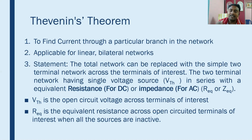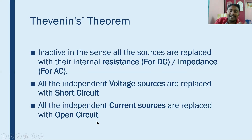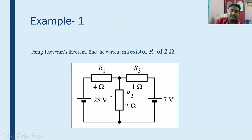VTH is the open circuit voltage across the terminals of interest. The terminals of interest means in any problem we have to find the current across one branch, so that is the terminals of interest. R_equivalent is the resistance across the open circuit terminals of interest when all the sources are inactive — inactive meaning all sources are replaced with their internal resistances. If internal resistances are not given, all independent voltage sources are replaced with short circuit and all independent current sources are replaced with open circuit.